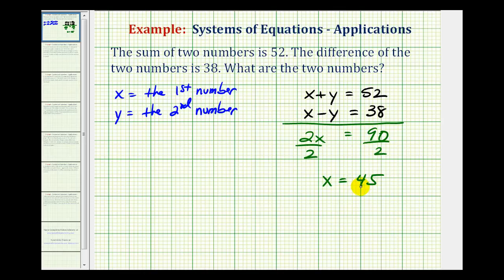Now the next step is to perform back substitution into either of these two equations to determine the value of y. So if we call this equation one and this equation two, using equation one, we would substitute forty-five for x.